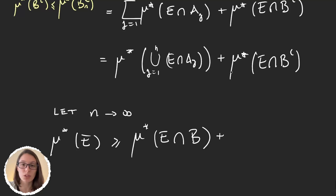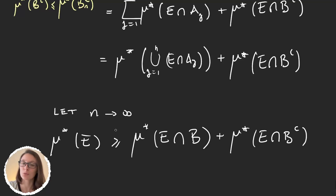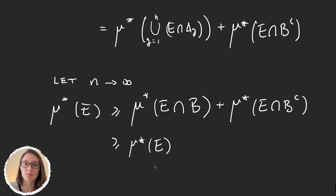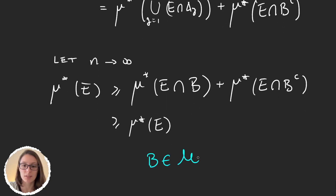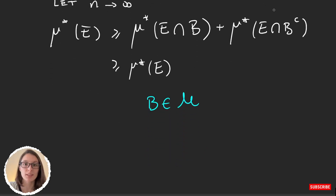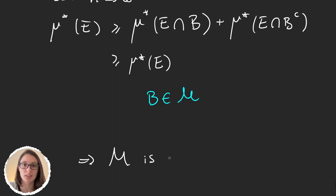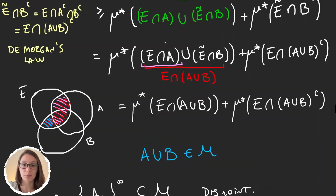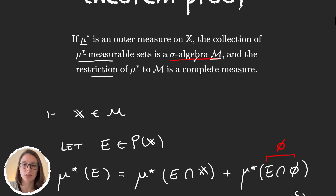And because we have all these properties, we can finally say that M is a sigma-algebra. It was a lot, but all this is proving this first sentence in the theorem. In the next video we will see the rest.